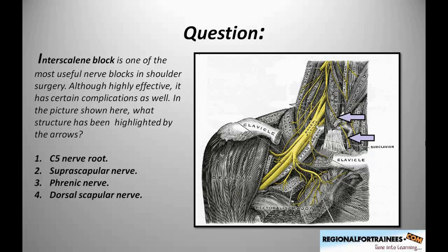The choices given were C5 nerve root, suprascapular nerve, phrenic nerve, and dorsal scapular nerve. The answer is phrenic nerve. However, let's have a closer look at why that is so.